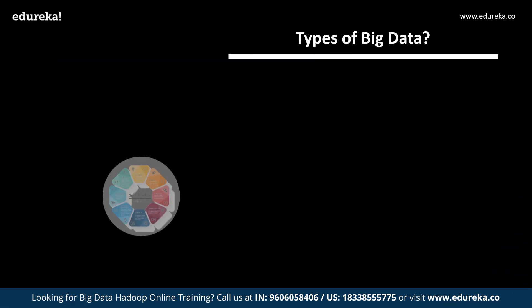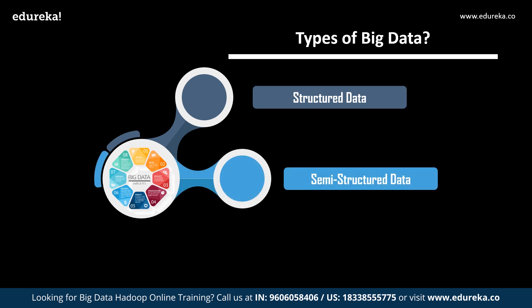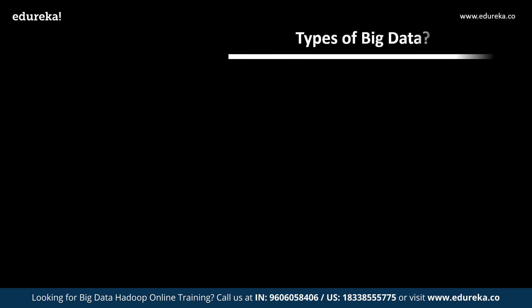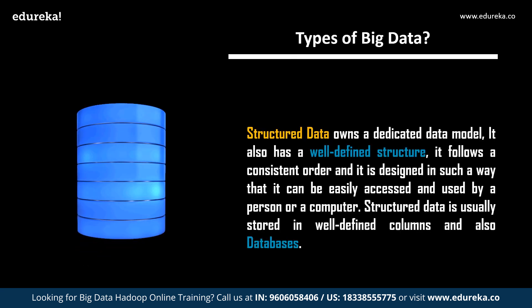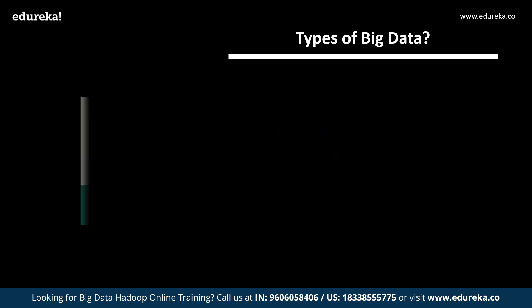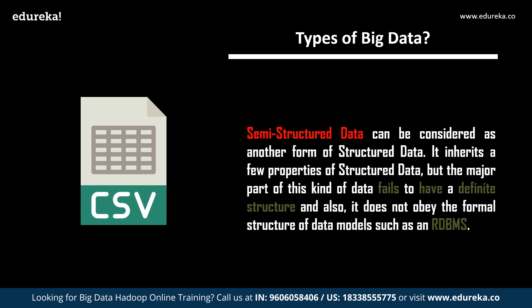Big data is generally categorized into three types: structured data, semi-structured data, and unstructured data. Structured data has a dedicated data model, a well-defined structure, and follows a consistent order; it is stored in well-defined columns and databases — for example, a simple DBMS. Semi-structured data can be considered another form of structured data — it inherits a few properties from structured data, but the major part fails to have a definite structure and does not obey formal data models like RDBMS. A common example is a CSV file.